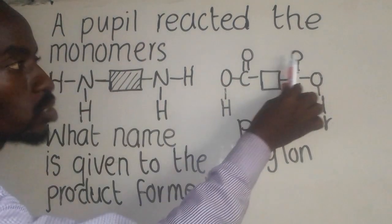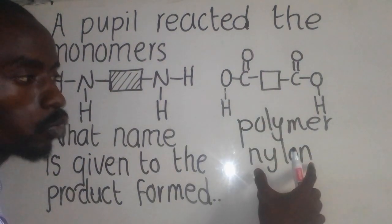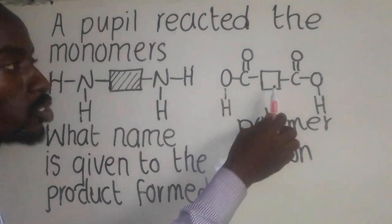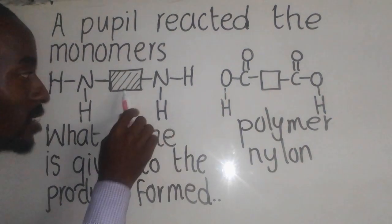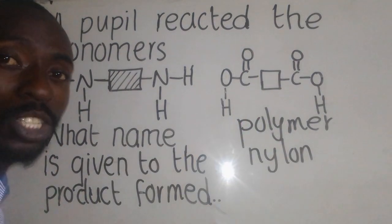Now when this here combines with this one here, they are going to form nylon. As you can see, these blocks here, they are different in such a way that this one is shaded, this one is unshaded to represent the two different types of hydrocarbons which are forming the link here.